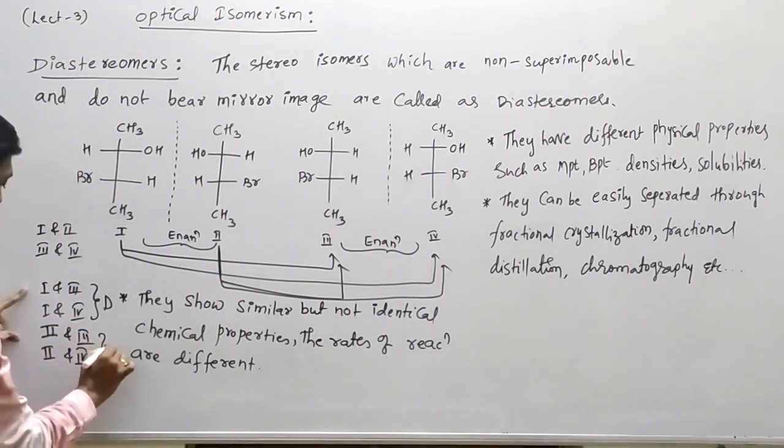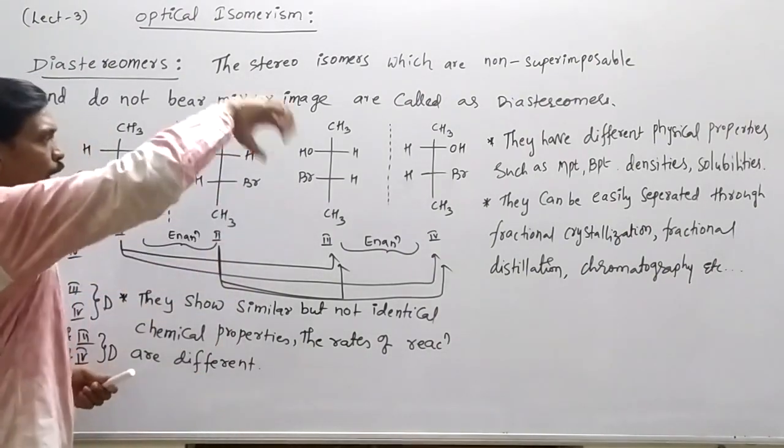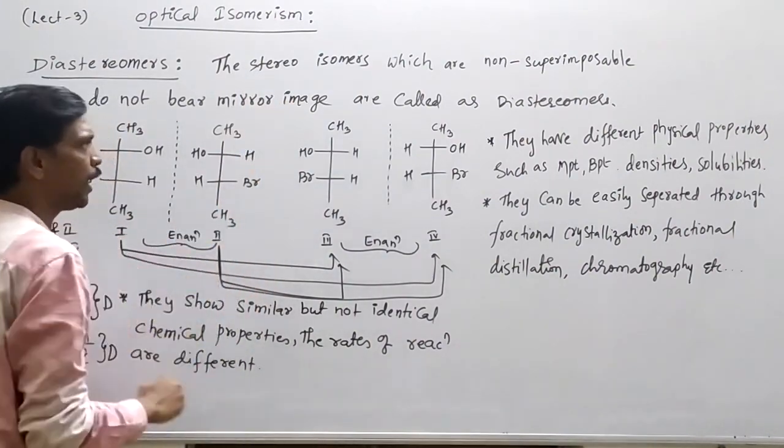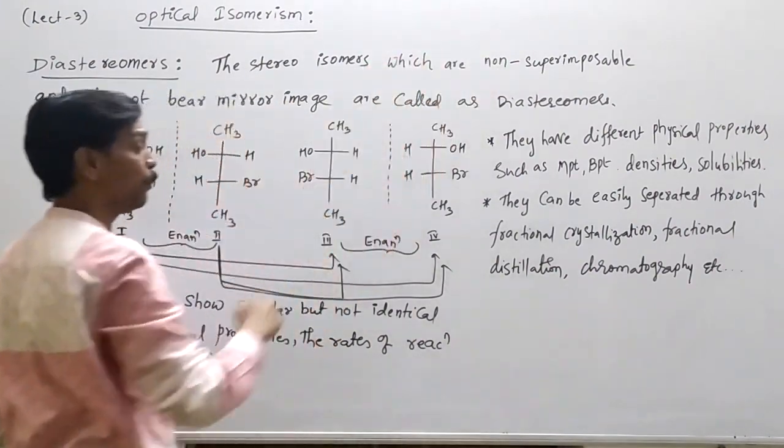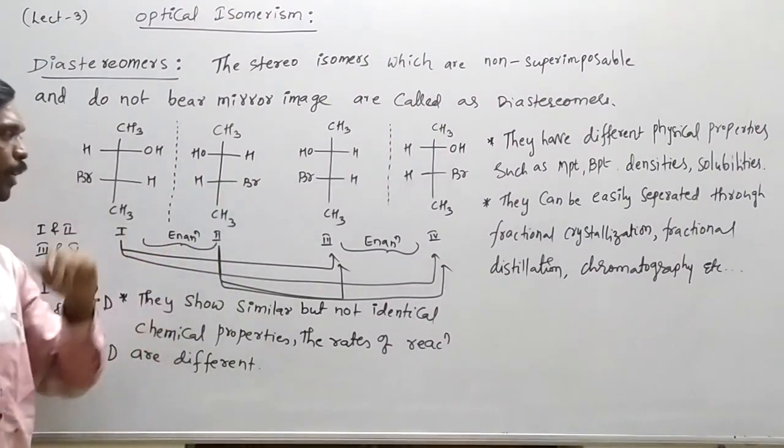Now 2nd structure, if you have 2nd structure, then it will not be a mirror image, and non-superimposable structure. This can be said diastereomeric pair. This is an important point.